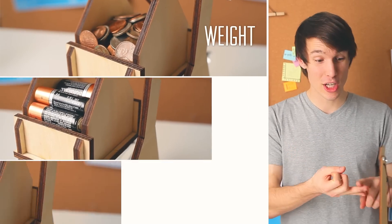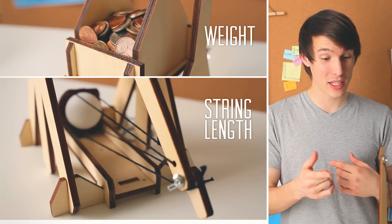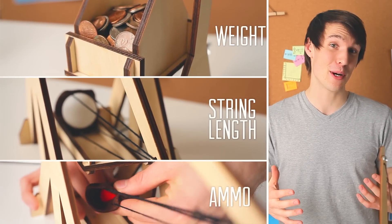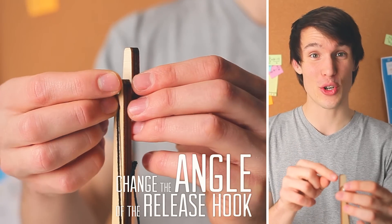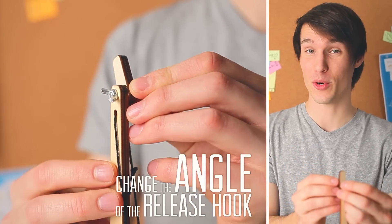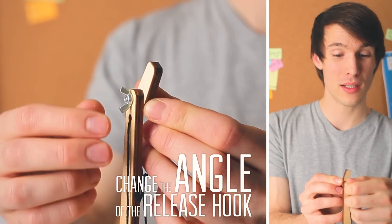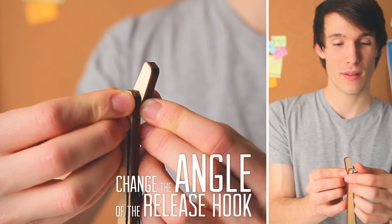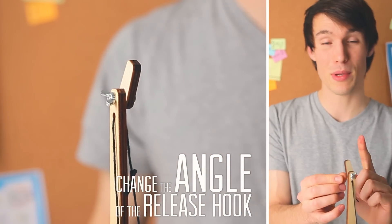You can change how your trebuchet fires by changing your weights, changing the string lengths, or you can even try firing something besides your ping pong ball. Changing the angle of your release hook also drastically changes how your trebuchet will fire by loosening the wing nut and moving it back and forth. Then tighten the wing nut again to keep it in place.